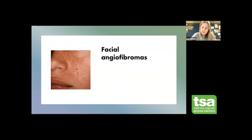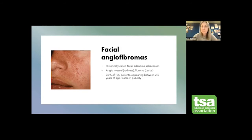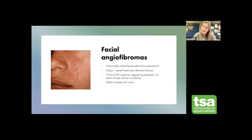The next feature is facial angiofibromas, historically called facial adenoma sebaceum. Breaking down the name: angio means vessels, fibroma means tissue — so they have two components: a red vascular component and a fibrous tissue component. They are red bumps, with the redness coming from the vessels. About 75% of patients have them, and they usually appear between two to five years of age. They can worsen during puberty and in undiagnosed patients can be mistaken for acne.